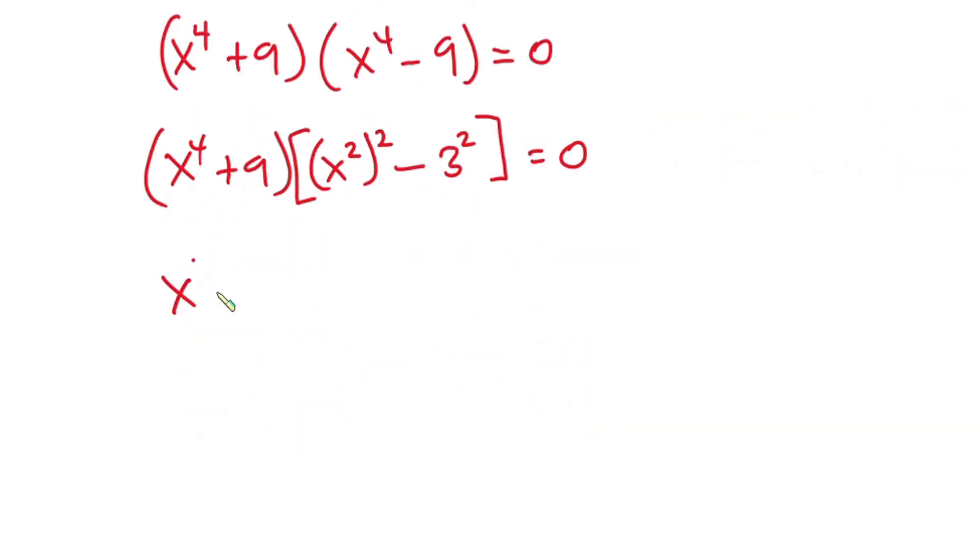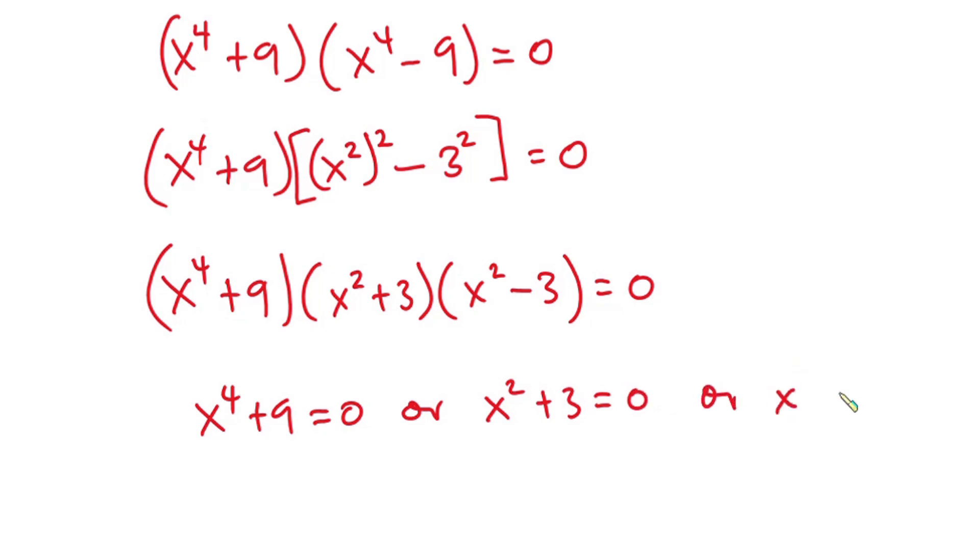So we have x to the 4th power plus 9. Now considering what is in the square bracket, I mean this whole thing. This is difference of 2 squares, so I can write this as x to the 2nd power plus 3 then times x to the 2nd power minus 3 and this is equal to 0. Alright, now from here I can say that x to the 4th power plus 9 is equal to 0 or x to the 2nd power plus 3 is equal to 0 or x to the 2nd power minus 3 is equal to 0.